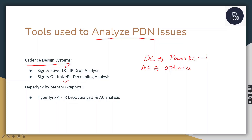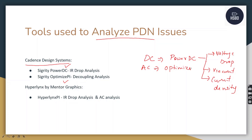Under DC analysis, we look at voltage drop across the plane, via current, and current density across the plane — the three points already discussed. These come under DC analysis, and Cadence provides Sigrity PowerDC for this. If you need a separate video on how to use these tools, just comment below with your queries. For DC analysis you use PowerDC, and in HyperLynx by Mentor Graphics there is HyperLynx PI, which handles both DC and AC analysis.